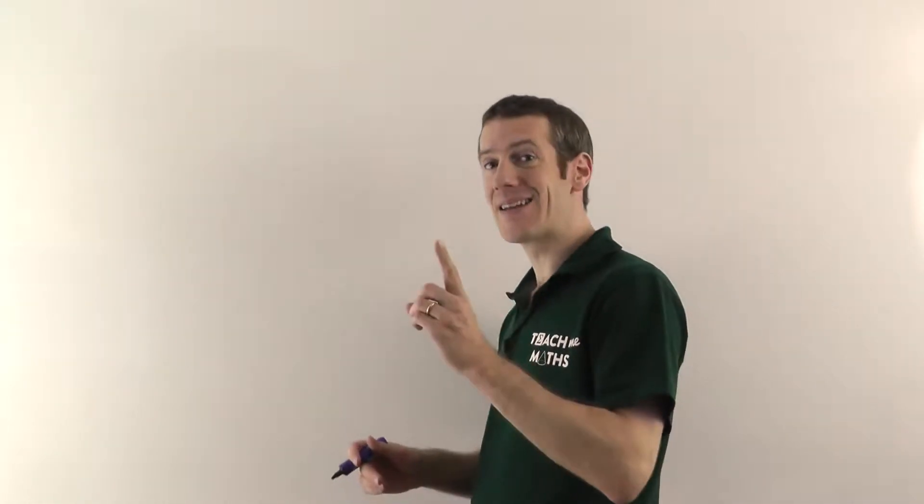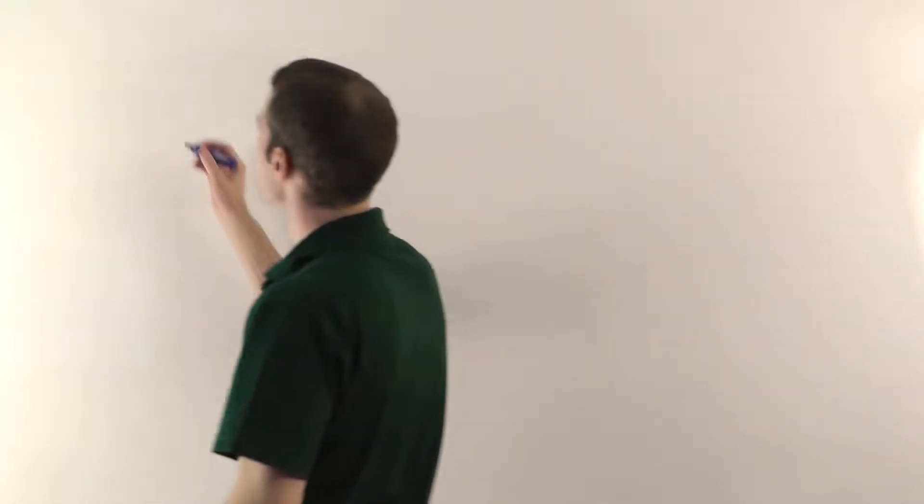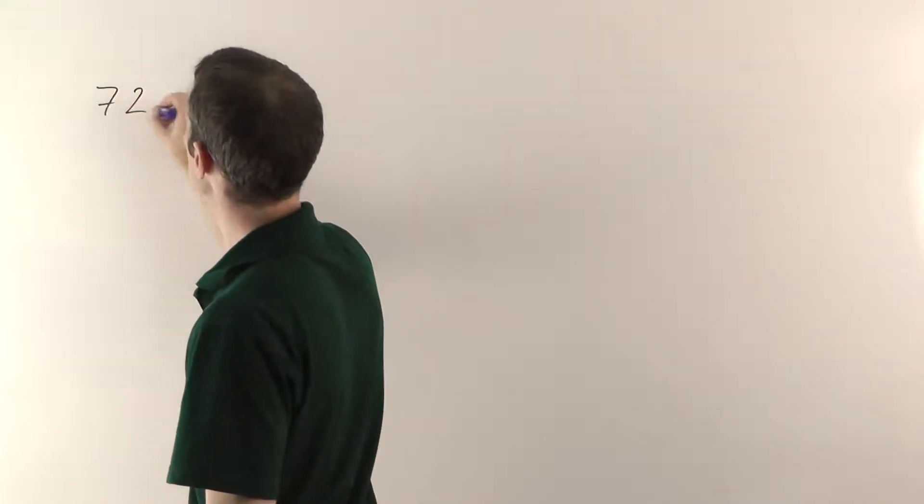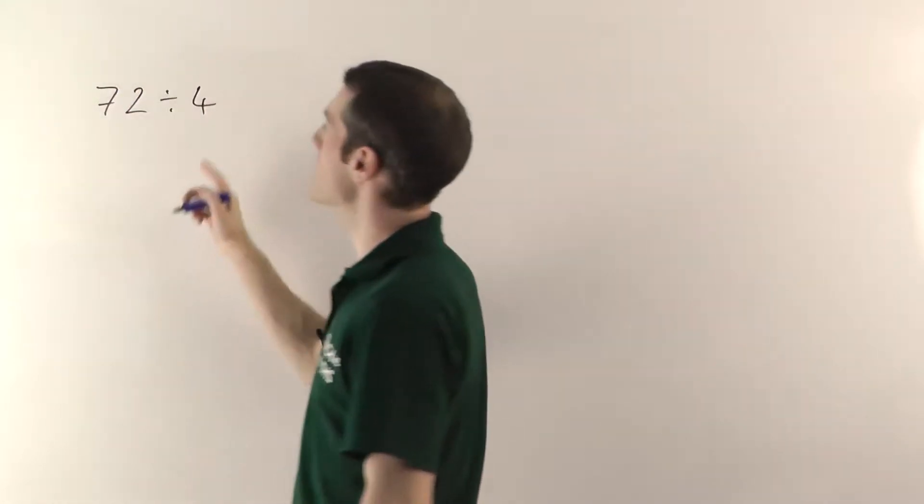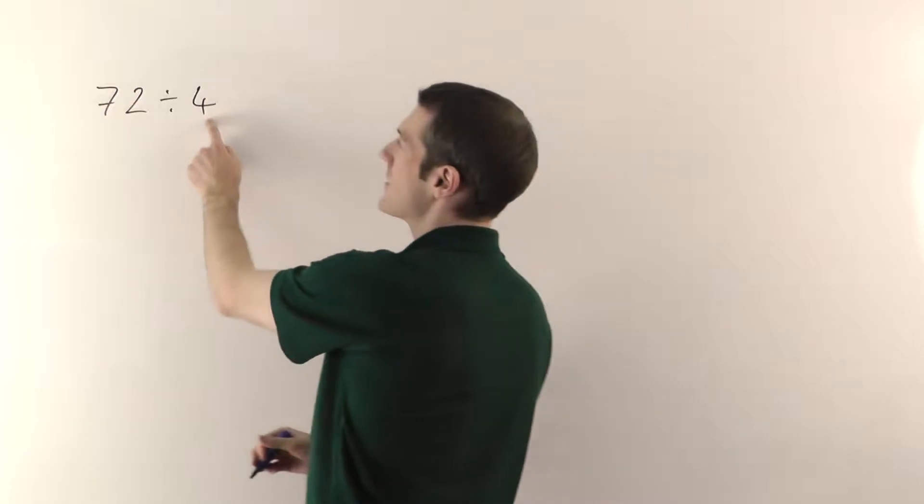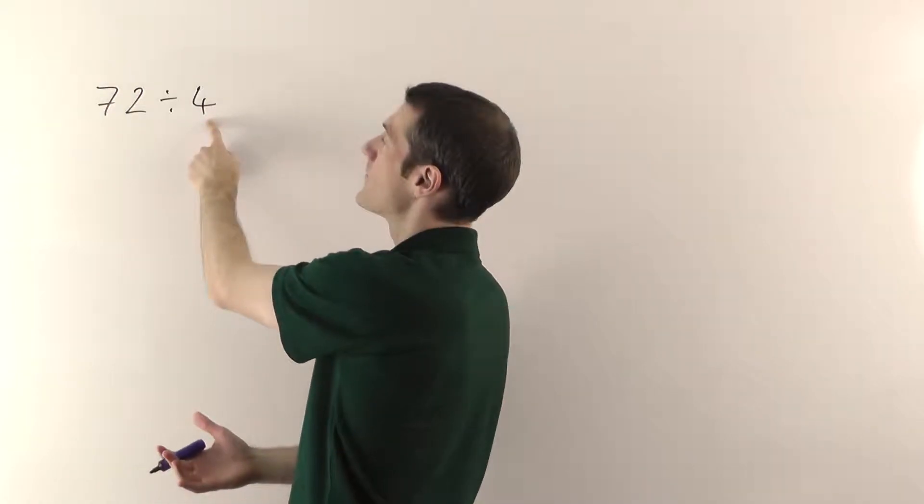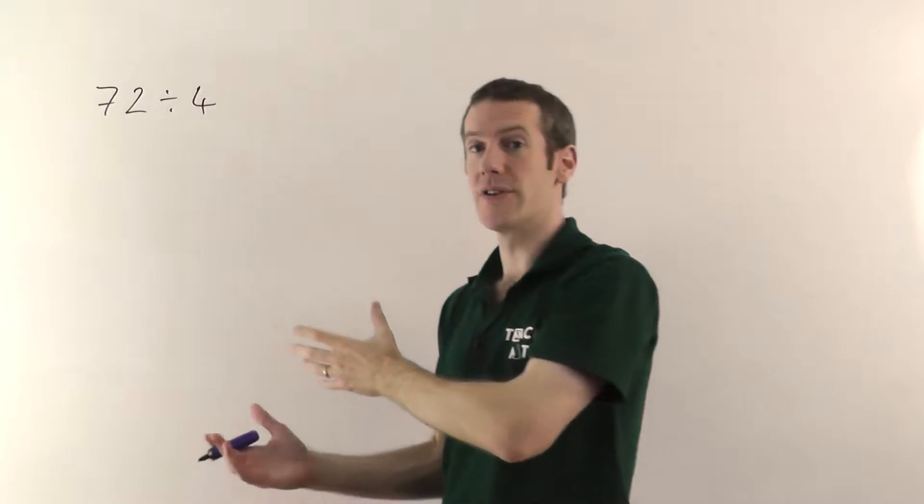Short division is when you're dividing by a single digit. So if you've got a number like 72, let's say, and you're dividing it by 4, if the number you're dividing by, the 4 in this case, is a single digit, that's called short division.